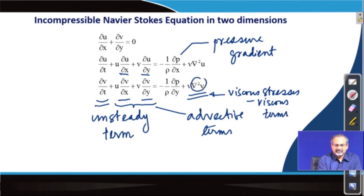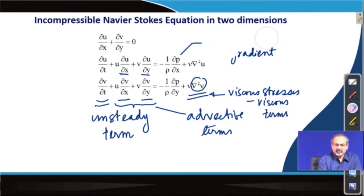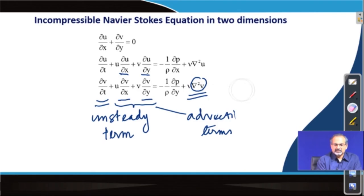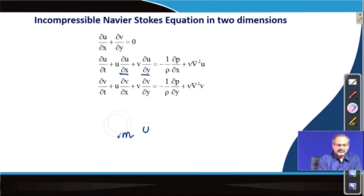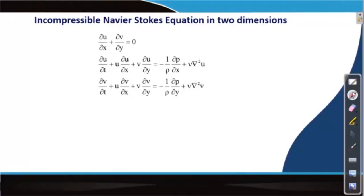Note that the viscous terms involve second-order partial derivatives — you did not see second-order partial derivatives in the Euler equation. The incompressible Navier-Stokes equations assume that the flow behaves without any effect of compressibility, meaning variations in pressure would be accompanied by variations in the flow field velocities, but cannot affect the density. Pressure and density are decoupled from each other in an incompressible situation. We will look at the incompressible Navier-Stokes equations in more detail in due course.